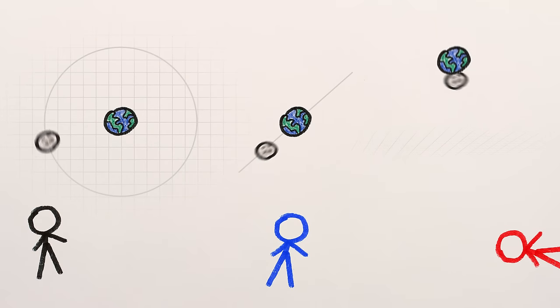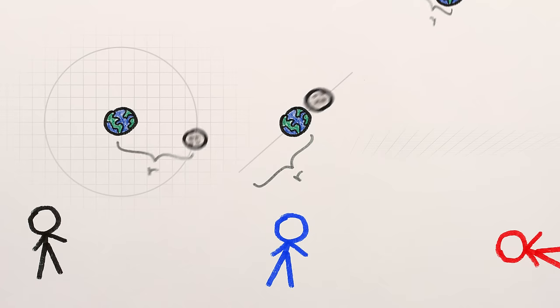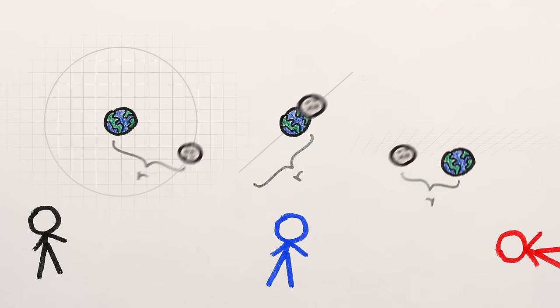In the Earth and Moon case, for example, all three perspectives appear quite different. But after a while, you might notice that regardless of the perspective, the maximum physical distance between the Earth and the Moon appears to be the same.